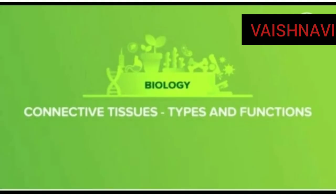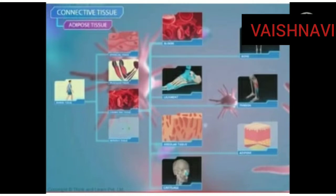Now let us know about connective tissue, the second type of animal tissue. Connective tissue is a closely packed tissue mainly carrying different materials to different parts of the body, as well as providing structural support. Connective tissue is divided into seven types.